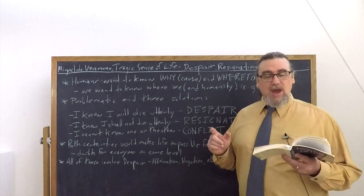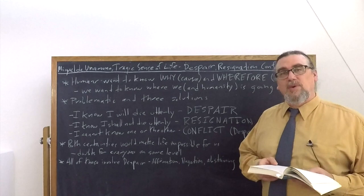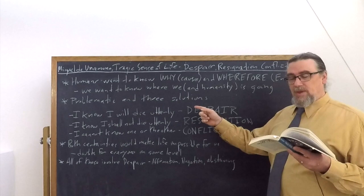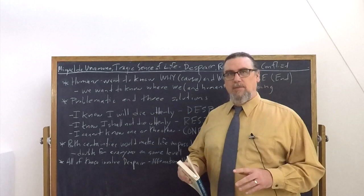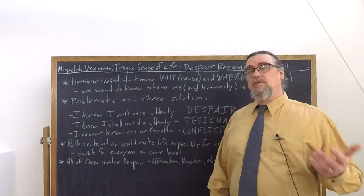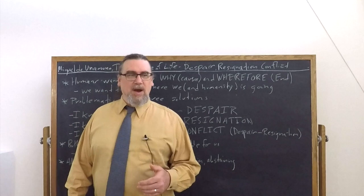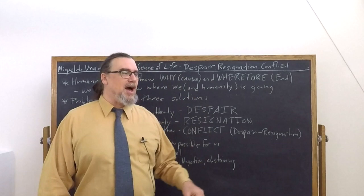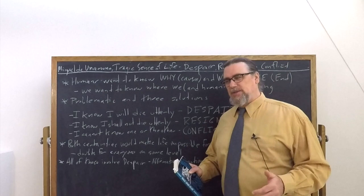He says there's three solutions. I know that I shall die utterly, and then irremediable despair. We should pause on that. Irremediable means nothing can actually fix this. You can try to remove your despair for a while by watching cool stuff on Netflix or Hulu, or by shooting up or smoking something, or drinking a lot, or losing yourself in passionate affairs. But lurking in the background is going to be: you're going to die, and that's all there is, and this is all you get.